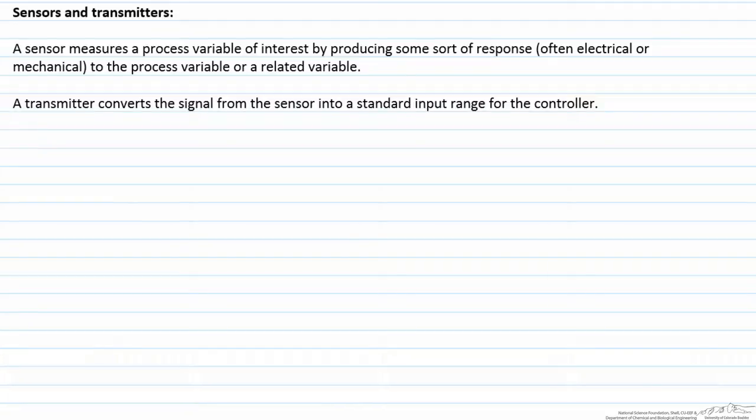However, a controller will not necessarily be able to pick up that signal or understand the signal that the sensor gives, so that is what the role of the transmitter does. The transmitter converts the signal from the sensor into a value that the controller can understand, generally an electrical signal such as milliamps or something defined as percent transmitter output.